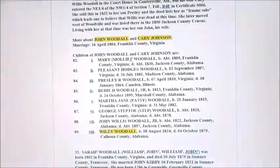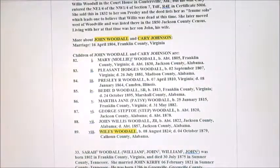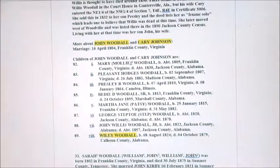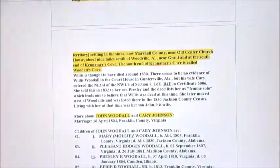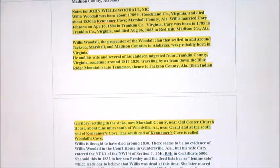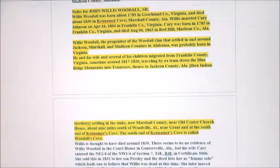There are many different branches of Woodalls here, so you want to follow just your branch. Above Wiley Woodall is John Woodall and Carrie Johnson. Now I'm back to 1804 in Franklin County, Virginia, and there's quite a bit of information about them. We've got John Wallace Woodall Sr. — Wallace Woodall was born in Goochland, Virginia and died in Kenimer Cove in 1830.